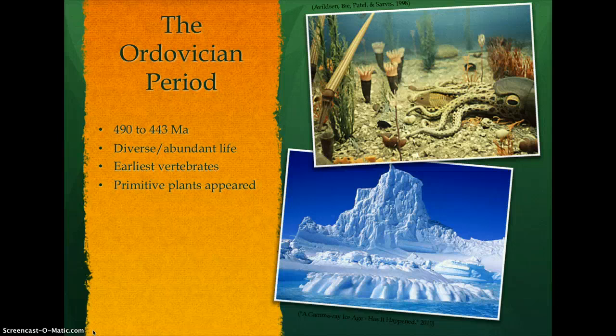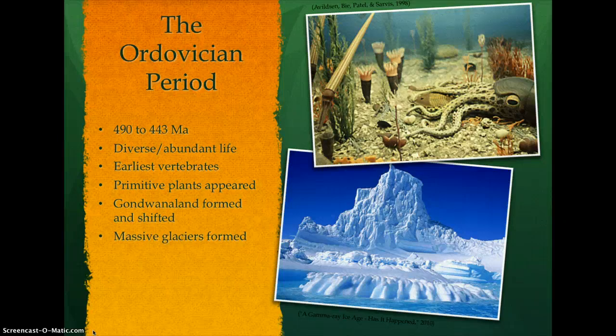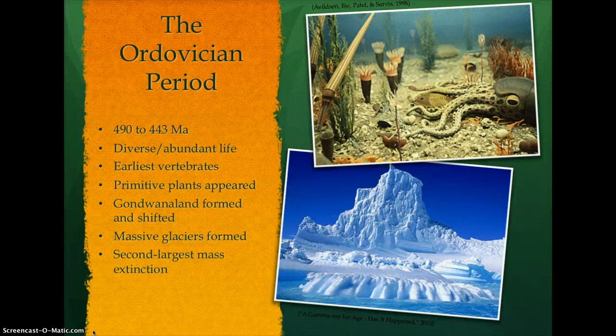As Gondwana land formed and shifted over the South Pole, glaciers formed, marking the beginning of another ice age, which led to lower sea levels. This climate change caused the second largest mass extinction in history, as shallow water life forms were deprived of their environment.